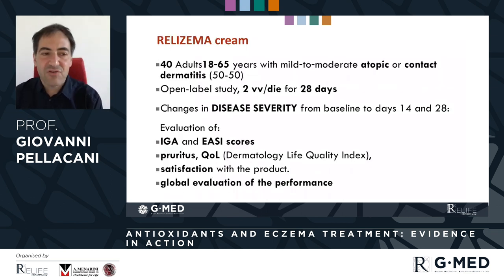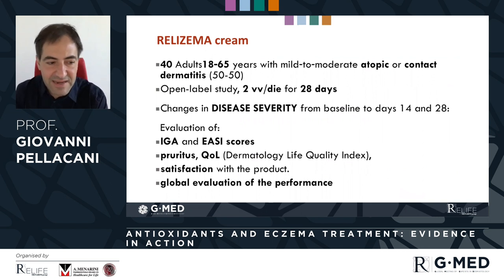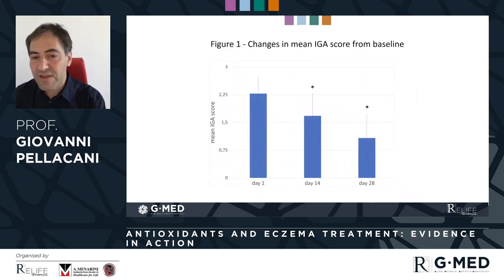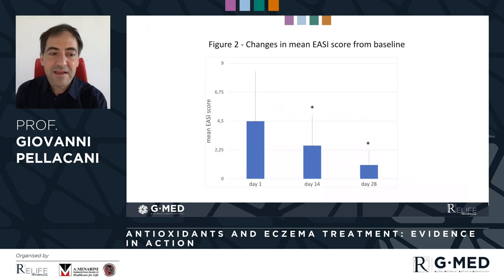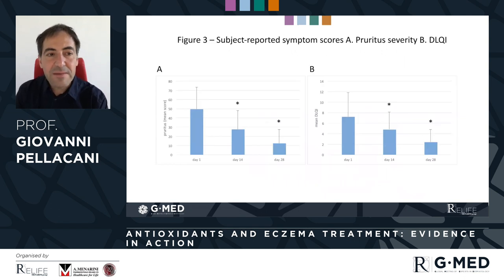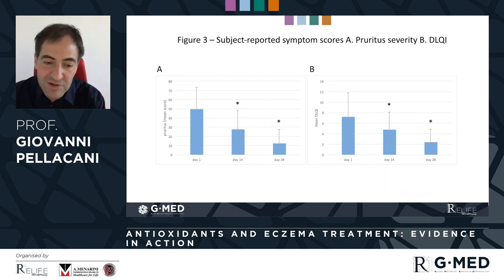We recruited a population of adults with atopic dermatitis or contact dermatitis and treated them for four weeks, twice a day, evaluating disease severity, pruritus, quality of life, and other outcomes. It is evident, already at two weeks but more markedly at four weeks, that the clinical severity is dramatically and significantly reduced. We can see the reduction of the EASI score, and more interestingly, along with the clinical benefit, there is also a reduction of pruritus and a reduction of the DLQI score. So the quality of life of these patients was markedly increased, mainly because of the reduction of pruritus.